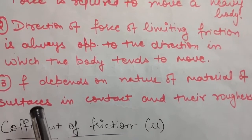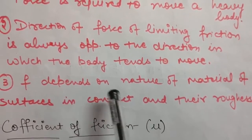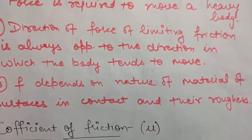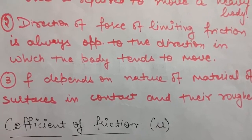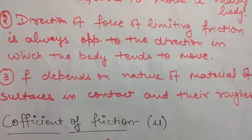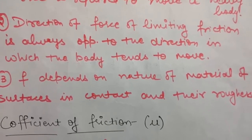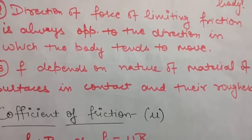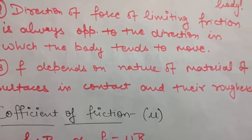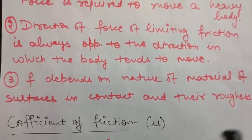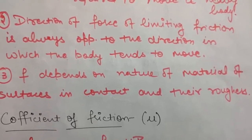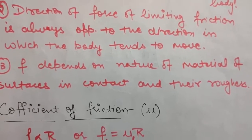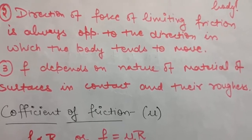The third law is that the force of limiting friction between any two bodies depends on the nature of the material of the surfaces in contact and their roughness. Greater the roughness of the surfaces, greater will be the force of friction. In some questions you will see the surface described as smooth, meaning frictionless, because friction requires roughness. Practically, every surface has some roughness and therefore some friction.